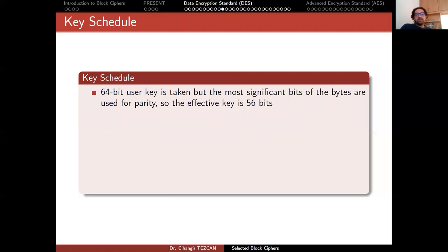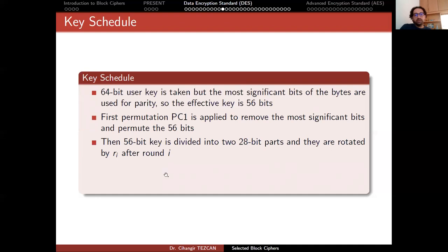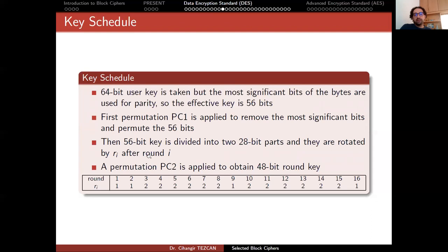Let's look at the key schedule. A 64-bit user key is taken, but the most significant bits of the bytes are used for parity, so the effective key is 56 bits. This parity check is just used for error checking. The first permutation, PC1, is applied to remove the parity bits and permute the 56 bits which are actually used in encryption. Then the 56-bit key is divided into two 28-bit halves, and they are rotated by r_i after round i — sometimes one bit, sometimes two. A permutation, PC2, is applied to obtain the 48-bit round key.